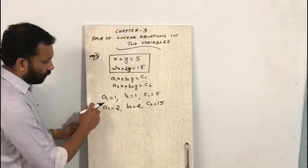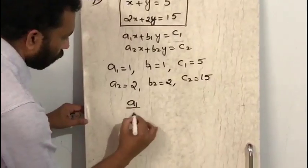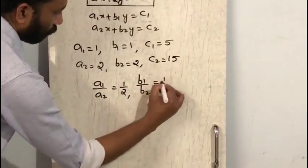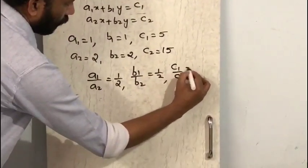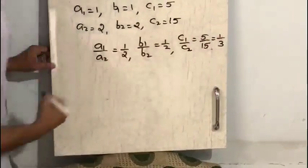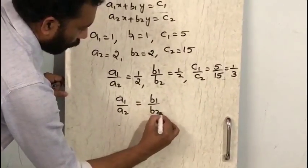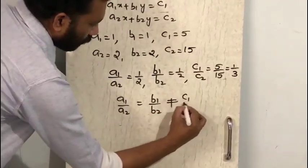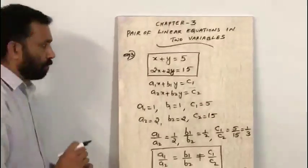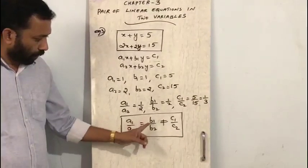For Example 3, a1/a2 equals 1/2 and b1/b2 equals 1/2, but c1/c2 equals 5/15 equals 1/3. So a1/a2 equals b1/b2 but is not equal to c1/c2. This is the condition for no solution: a1/a2 equals b1/b2, not equal to c1/c2.